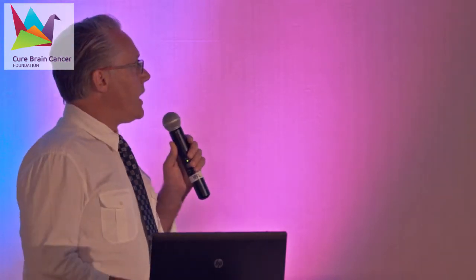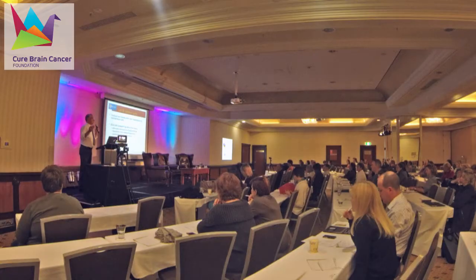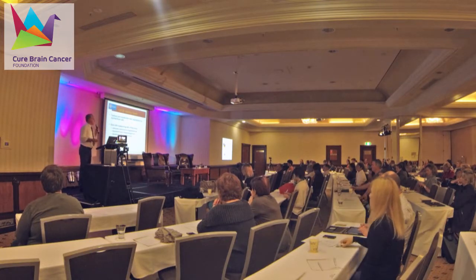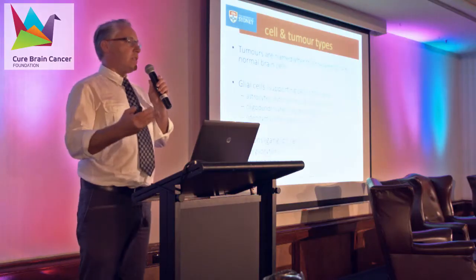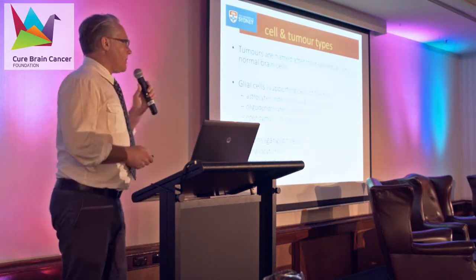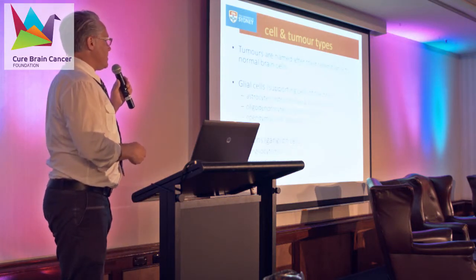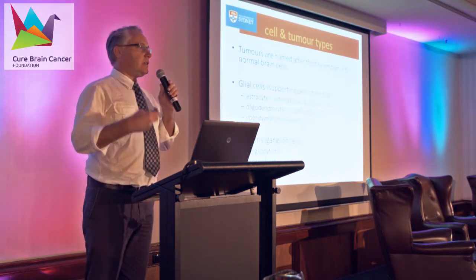Neuropathology has a lot of very confusing names in it. The reason for that is that tumours are named based on how they resemble normal cells of the brain. The predominant cells of the brain are glial cells — the supporting cells — and then we have the neurons or ganglion cells, which are the ones actually doing the information processing. Glial cells tend to give rise to a lot of the intrinsic brain tumours; hence they're called gliomas.